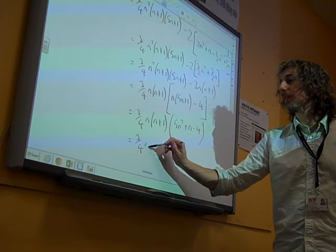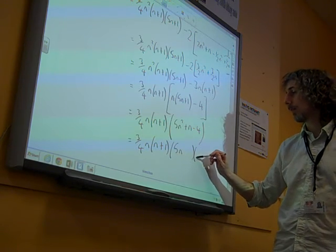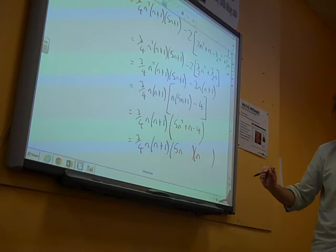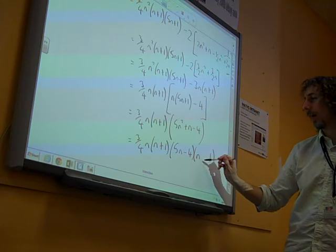Which is 3 quarters N, N plus 1, 5N squared plus N minus 4. Or, 3 quarters N, N plus 1, 5N, N, what must it be? A 1 there, and a minus 4 there. Is that right? 5N squared plus 5N minus 4 is N minus 4.